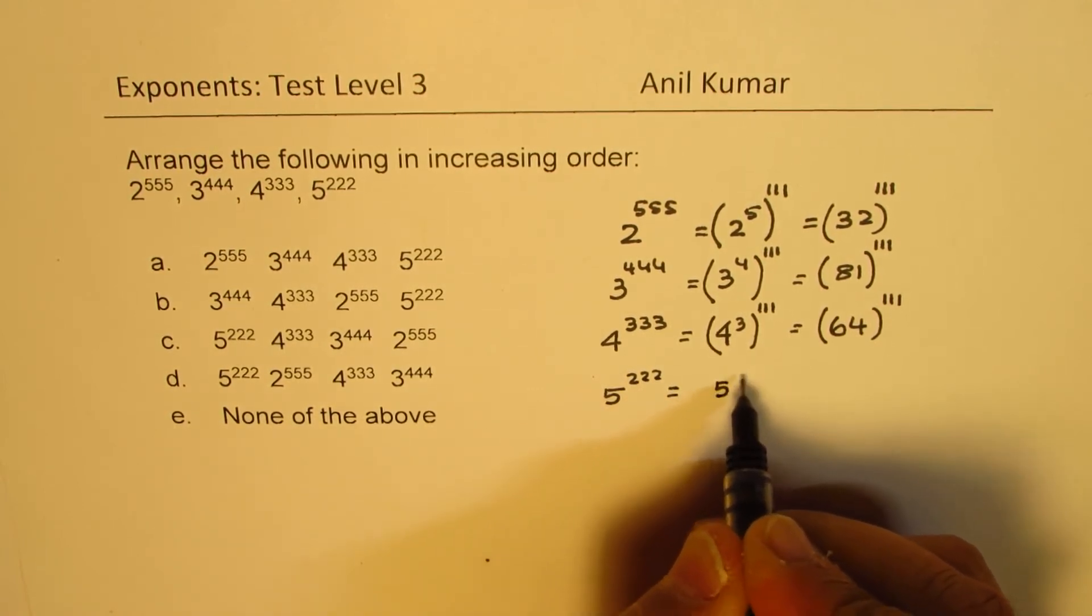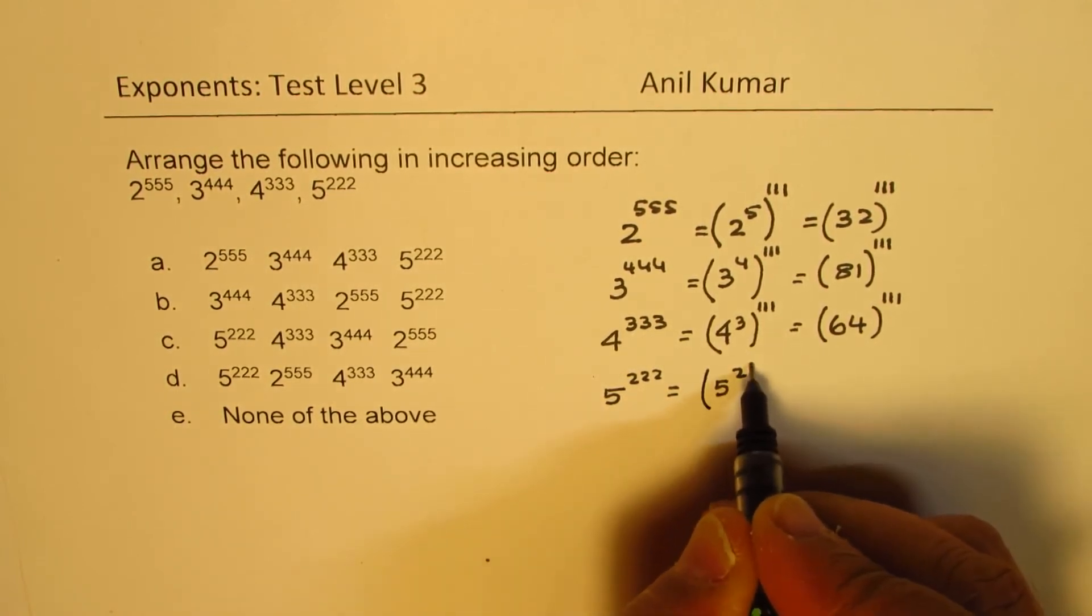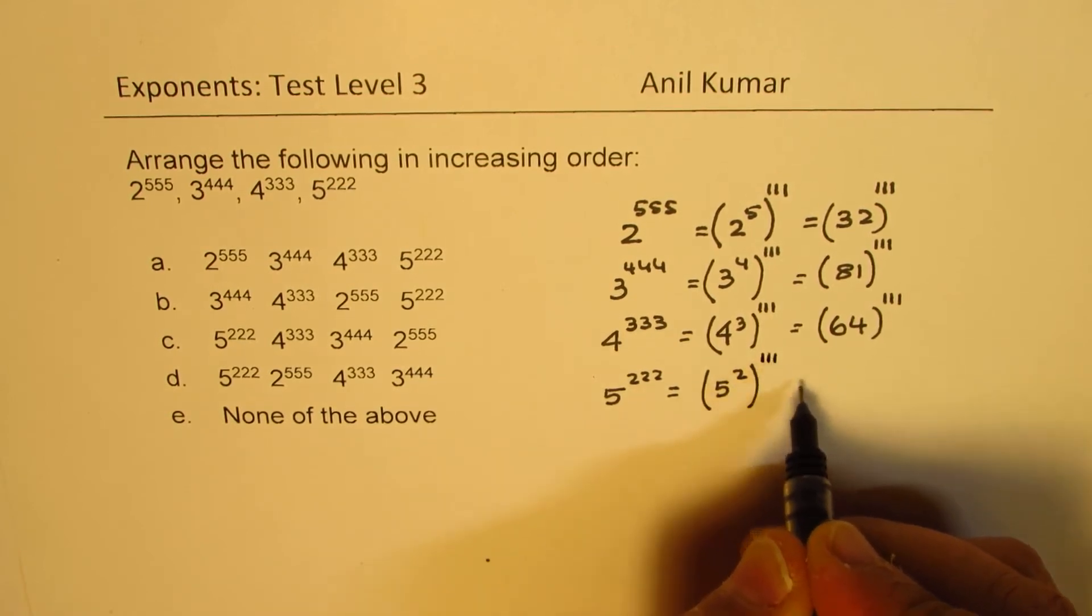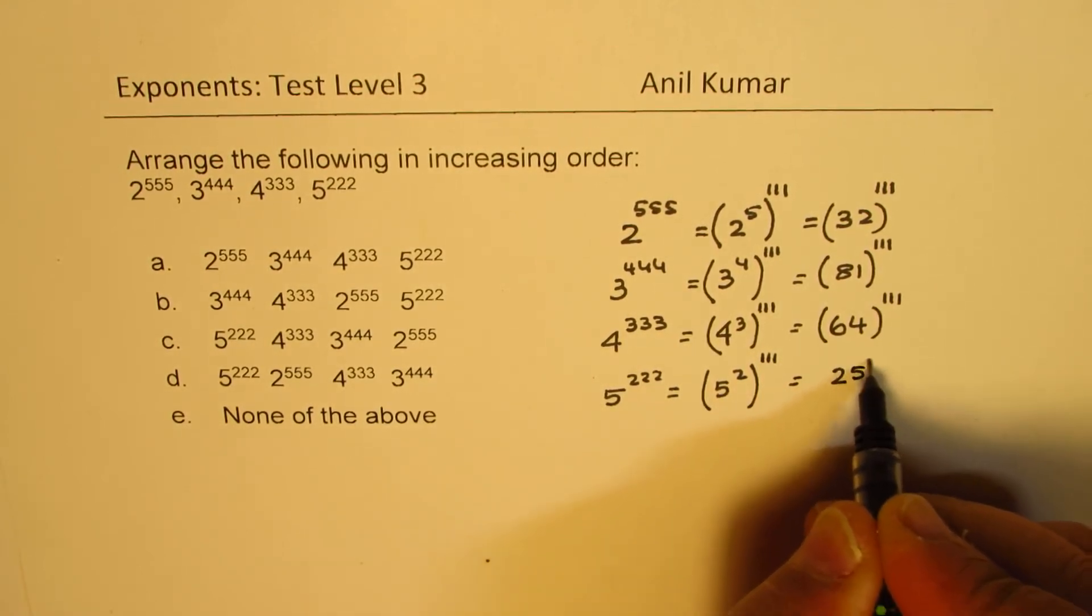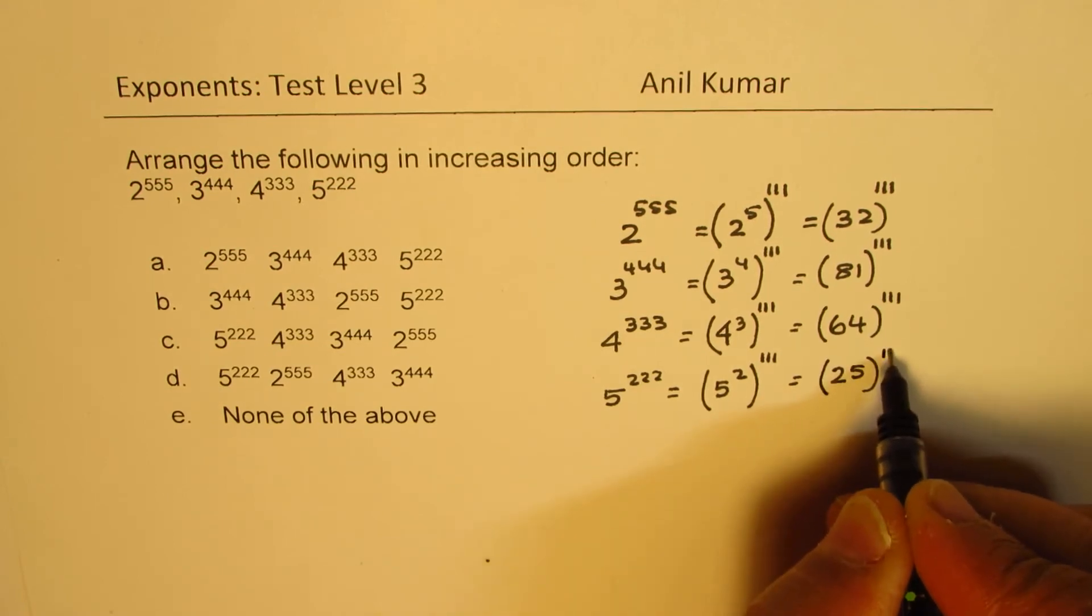So, I hope that gives you the concept to solve such questions. 5 squared is 25, so we get 25 to the power of triple 1.